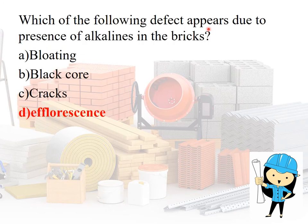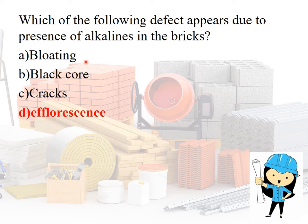Which defect appears due to the presence of alkali in the bricks? The answer is efflorescence. Black pore is formed due to improper burning. Bloating is a spongy swollen mass over the surface of the burnt brick, caused by excess carbonaceous material and sulfur. So: presence of alkali means efflorescence, presence of carbonaceous material means bloating, and if the brick is not burnt well, it is called black pore.